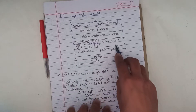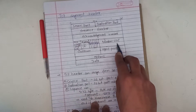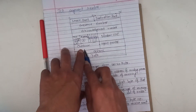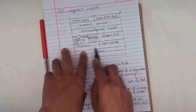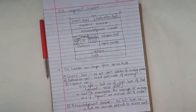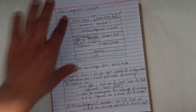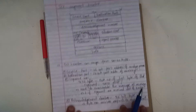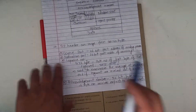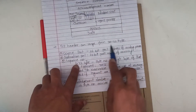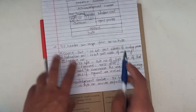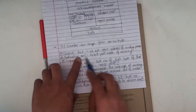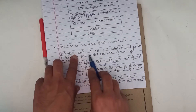Window size is very important. There is also checksum, urgent pointer, options, and data field. This is all about the segment header. The TCP header can range from 20 to 60 bytes. Source port and destination port are each 16 bits.